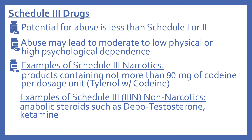Now we'll look at the schedule three drugs. These have a potential for abuse that's less than that of schedule one or schedule two. Their abuse may lead to moderate to low physical dependence or high psychological dependence. Examples of schedule three narcotics include products containing not more than 90 milligrams of codeine per dosage unit — for example, Tylenol with codeine. Schedule three non-narcotics, also known as 3N drugs, include anabolic steroids such as Depo-Testosterone and ketamine.